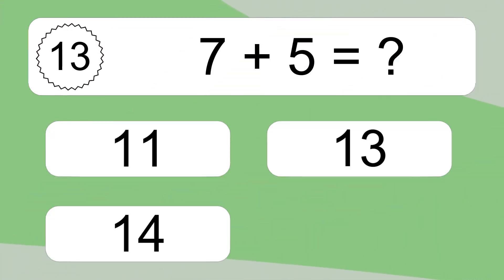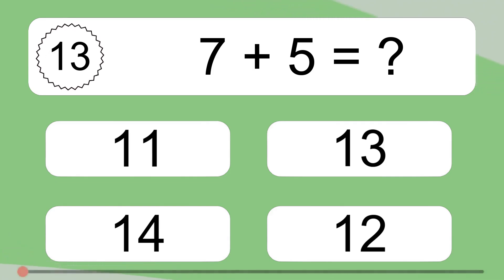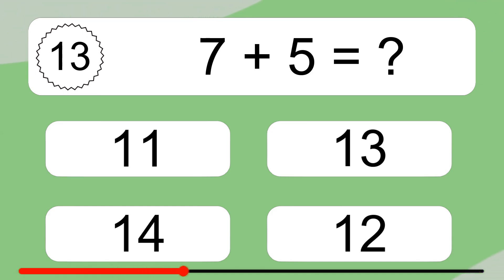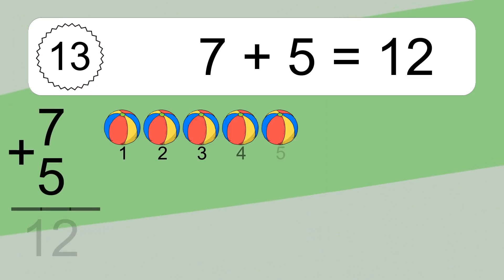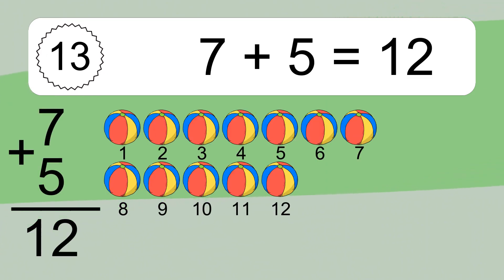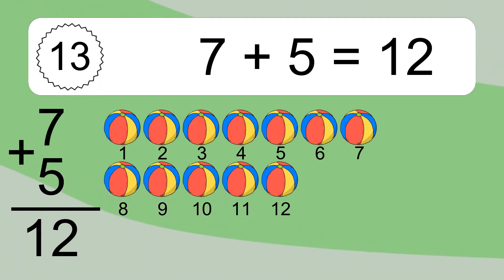Seven plus five equals what? Seven plus five equals twelve. Let's count it: one, two, three, four, five, six, seven, eight, nine, ten, eleven, twelve.